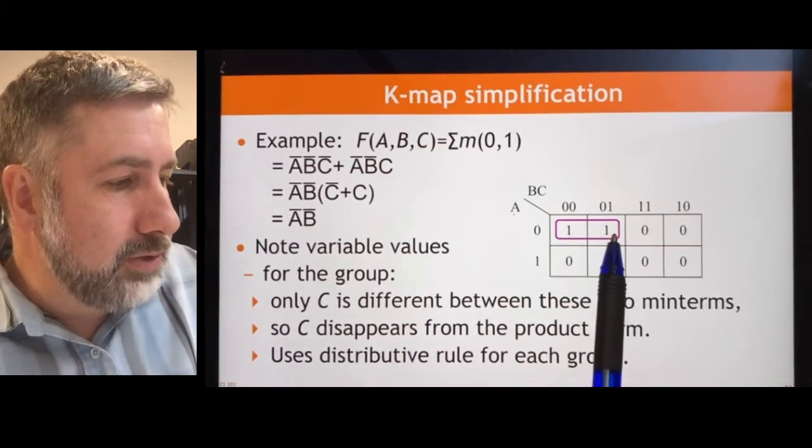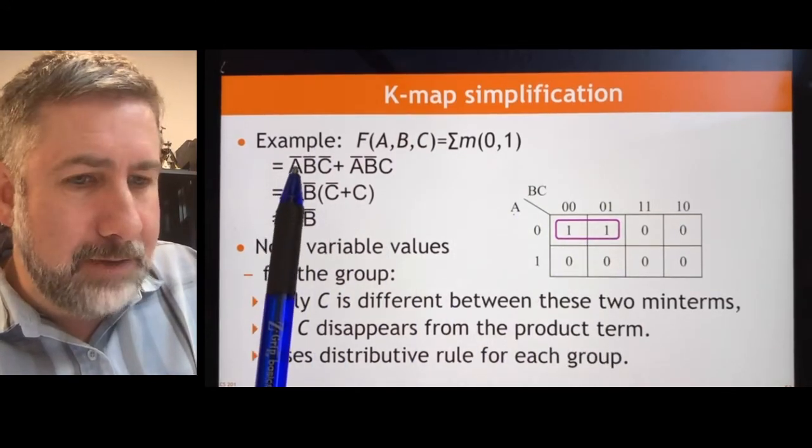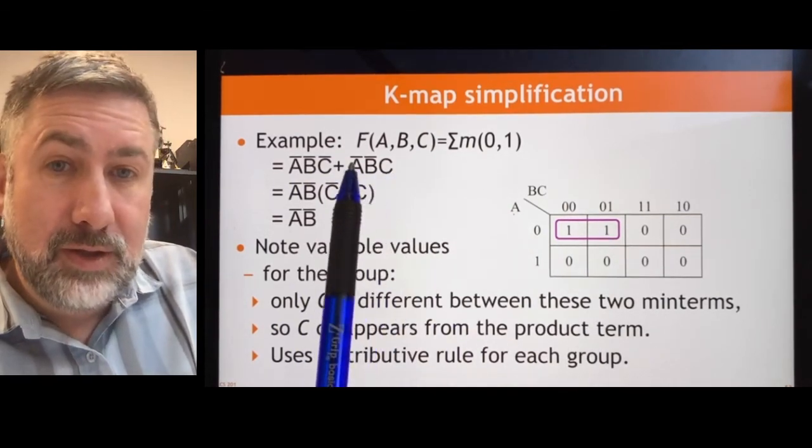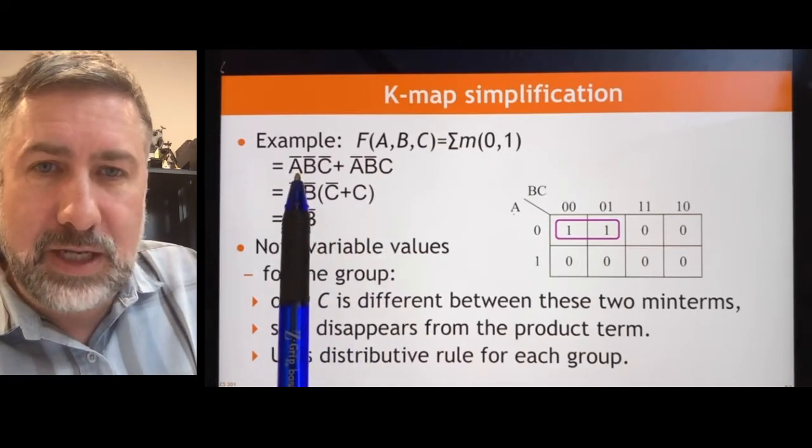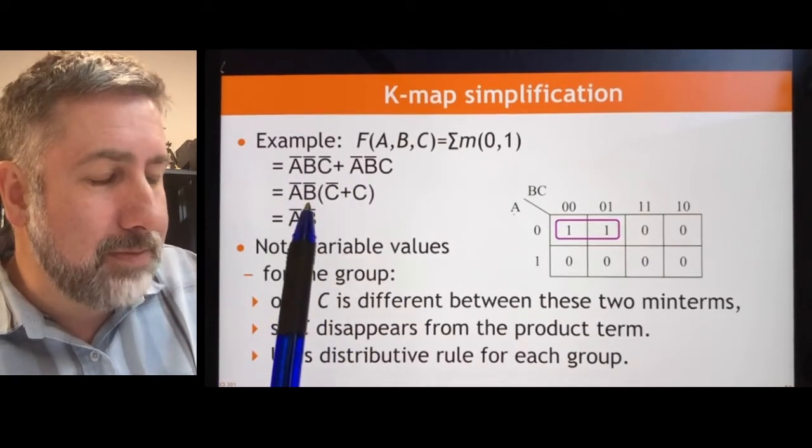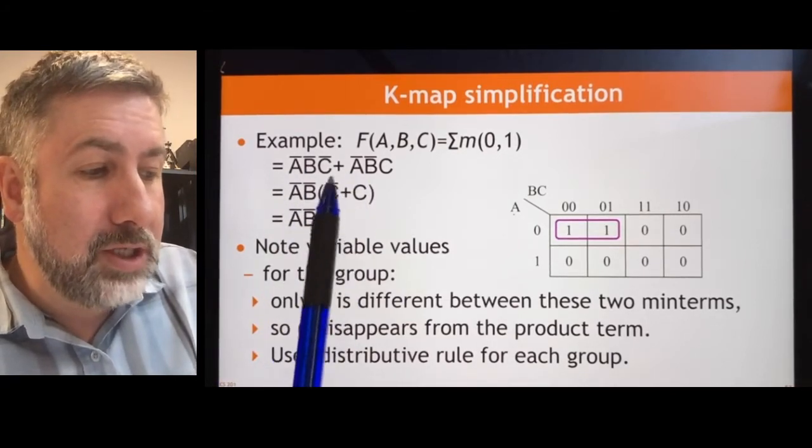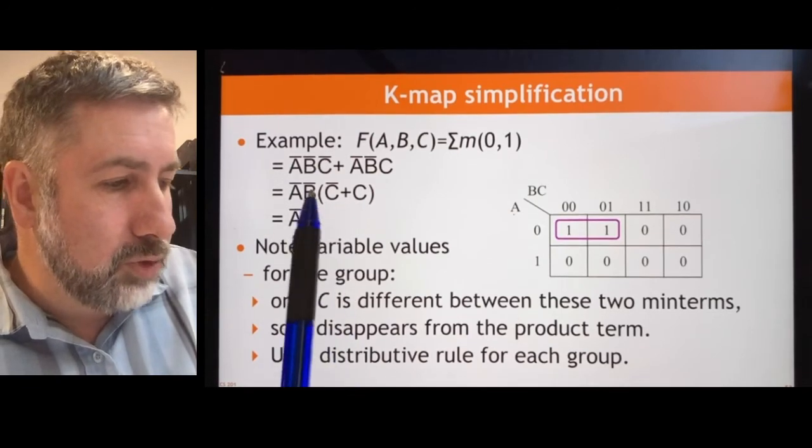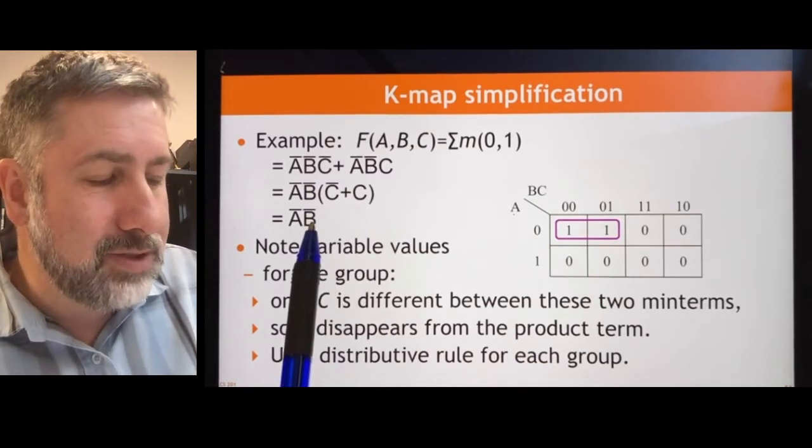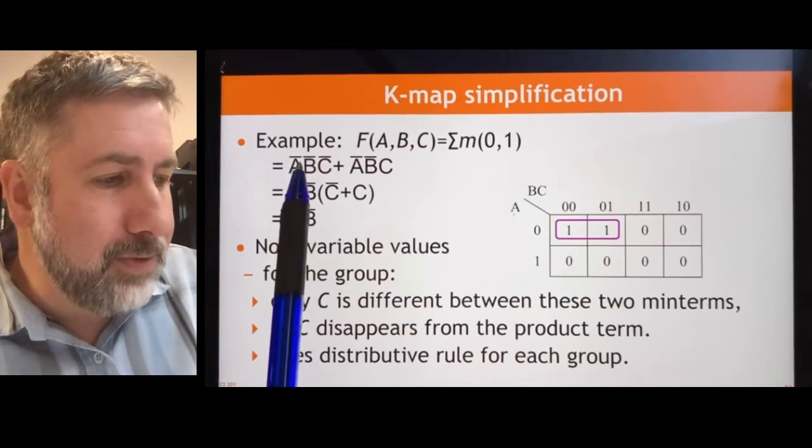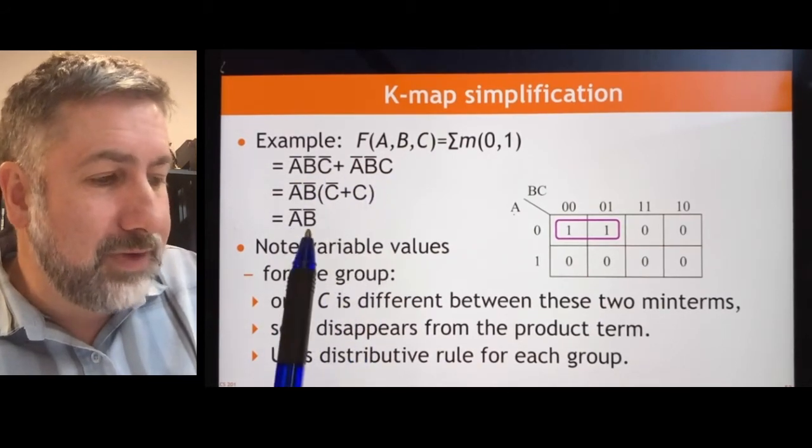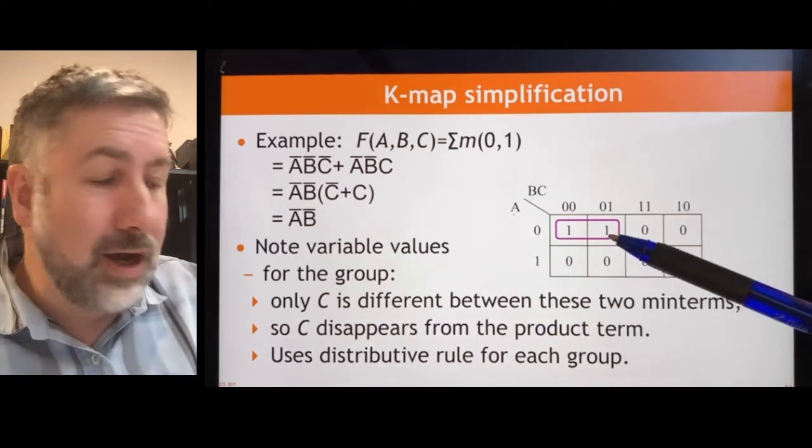So this is minterm 0 and this is minterm 1. Minterm 0 is A prime B prime C prime. Minterm 1 is A prime B prime C. Now, we can just take our regular logic process. We can take A prime B prime C prime, A prime B prime C, and we can, using distribution rule, take the A prime B prime out. C prime or C then is the term that would be resulted from that distribution. But we know that C prime or C is 1. And that means that it goes away. And so from A prime B prime C, A prime B prime C prime, A prime B prime C, those two together can be simplified down to A prime B prime.